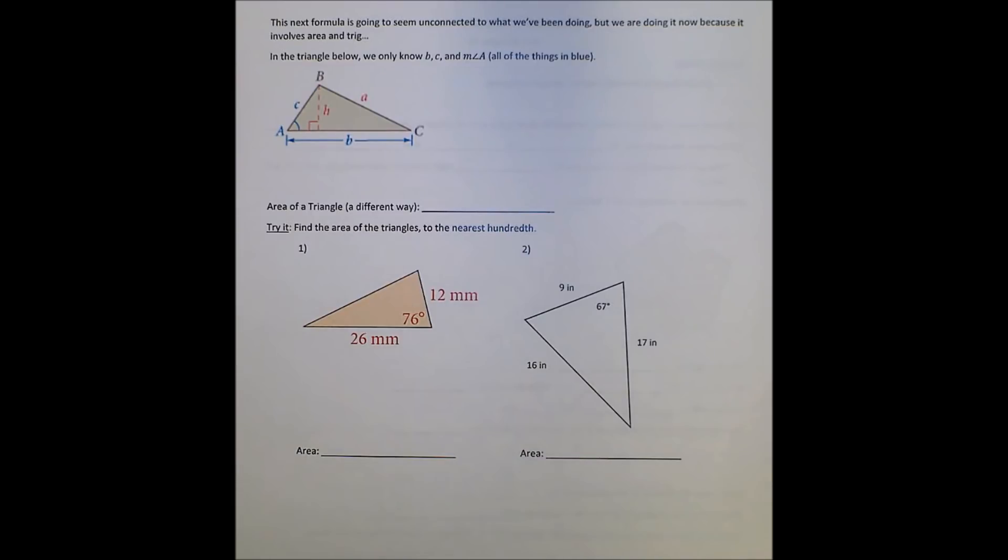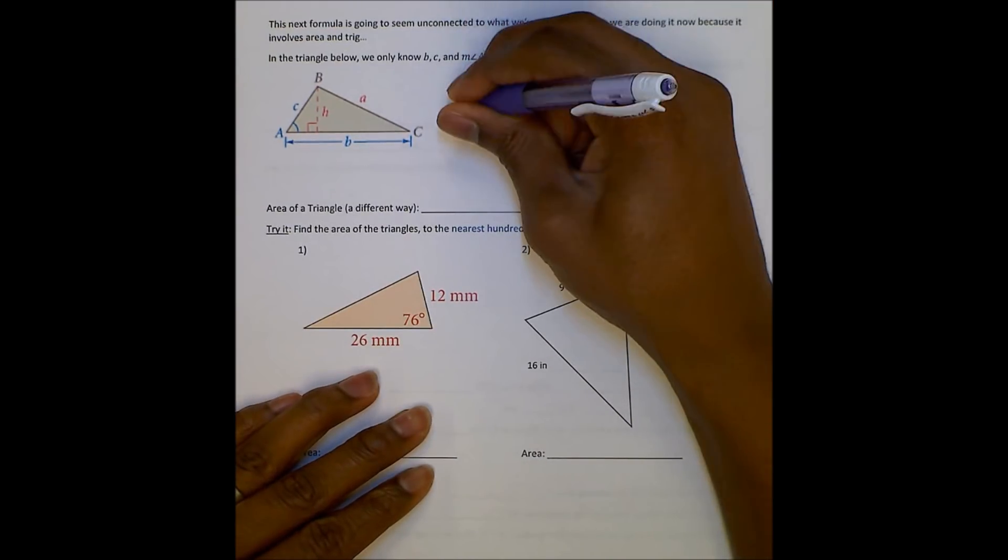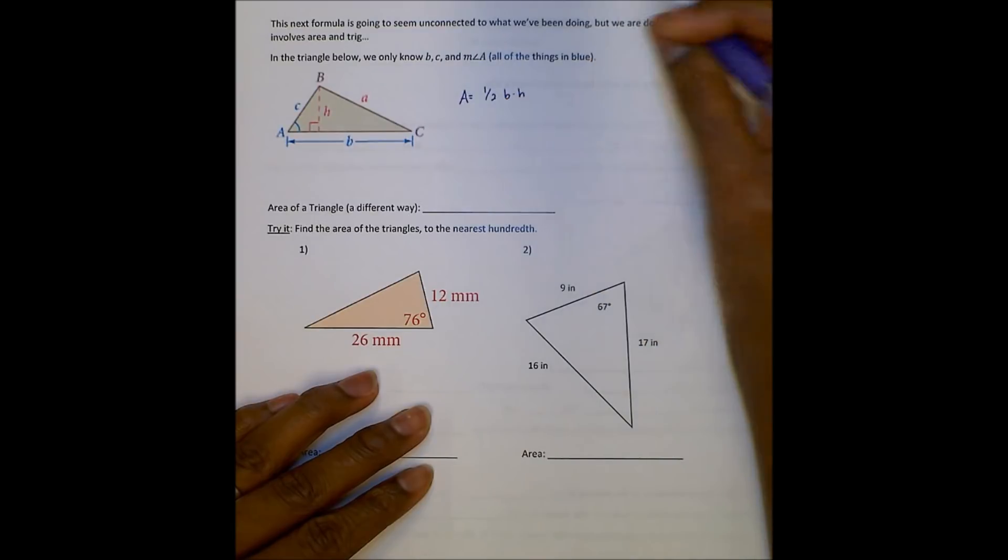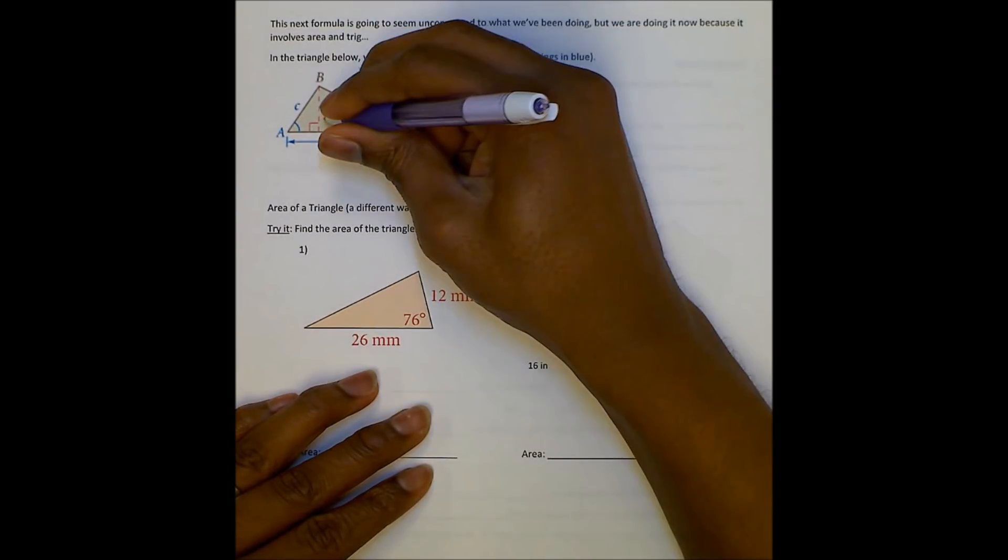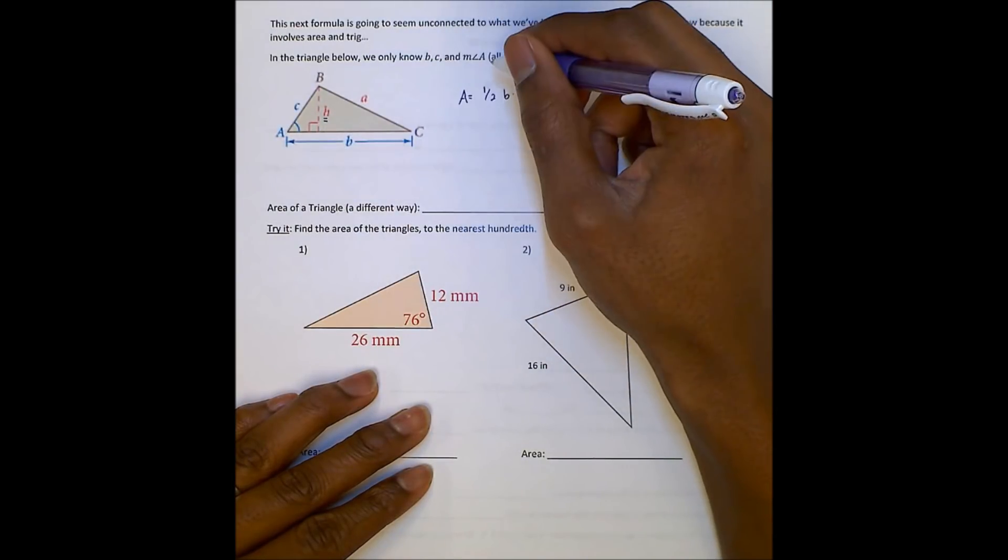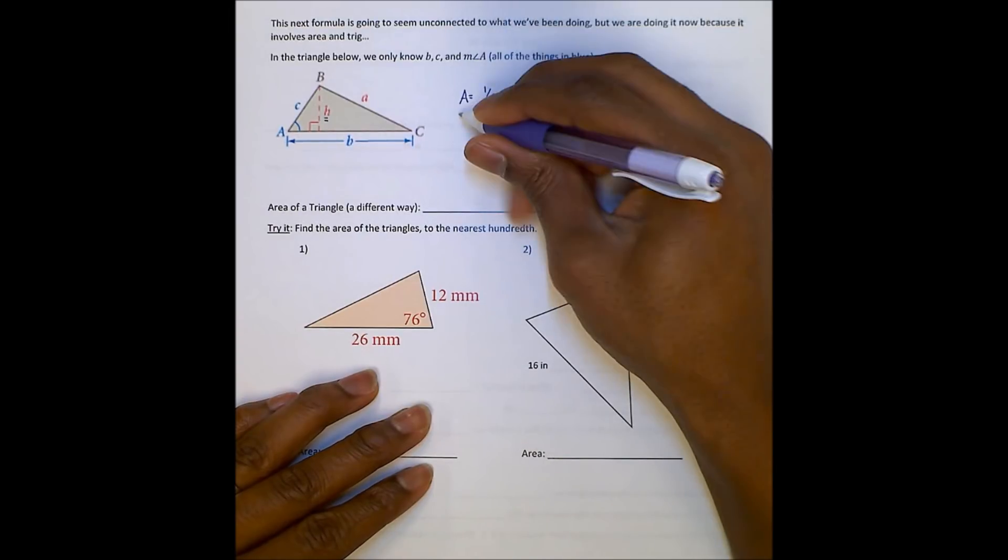This next formula is going to seem a little bit unconnected with what we're doing. But we're doing it now because it involves area and trig. In the triangle below, we only know B, C, and the measure of angle A. So all the things in blue. So I'm going to show you kind of how H and these sides are related. All right. So we all know the area of the triangle is 1 half base times height.